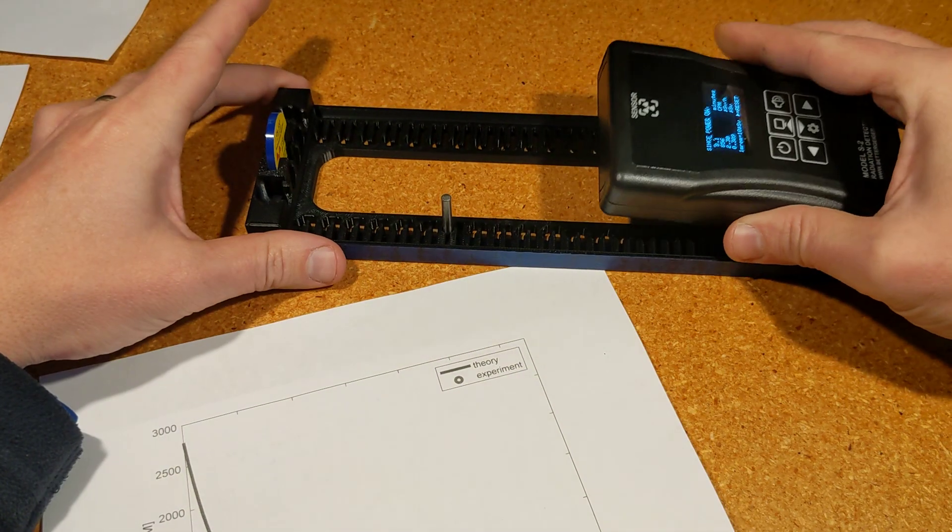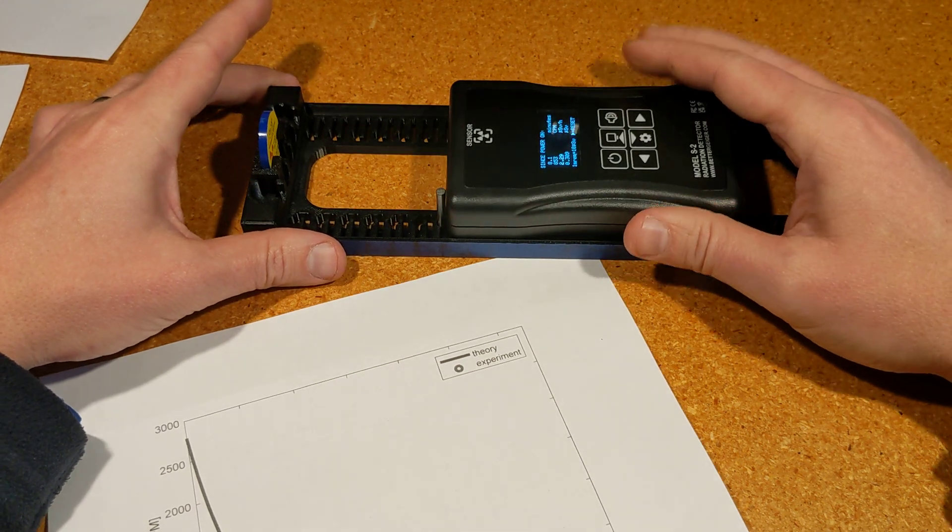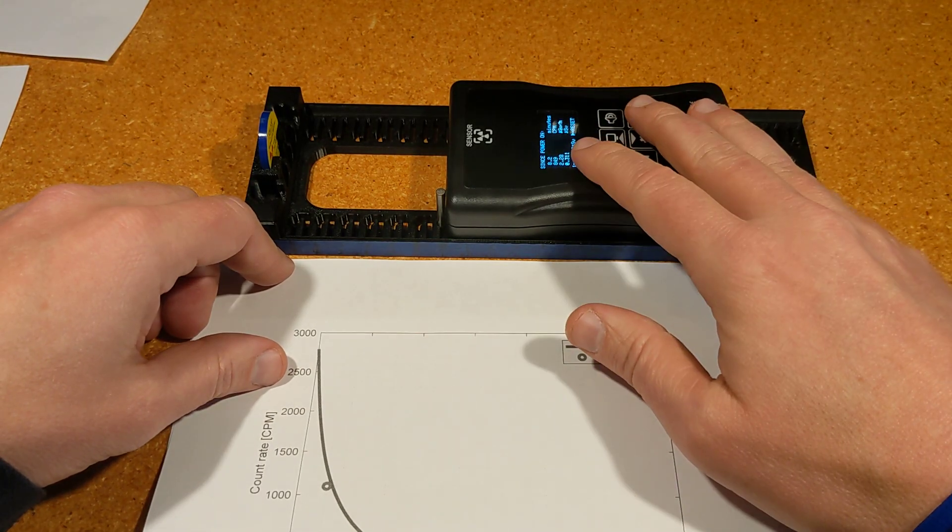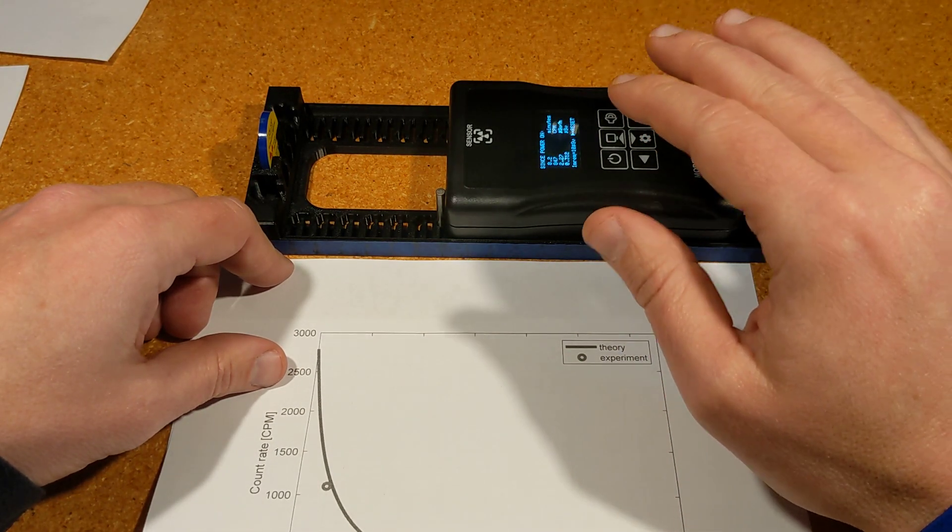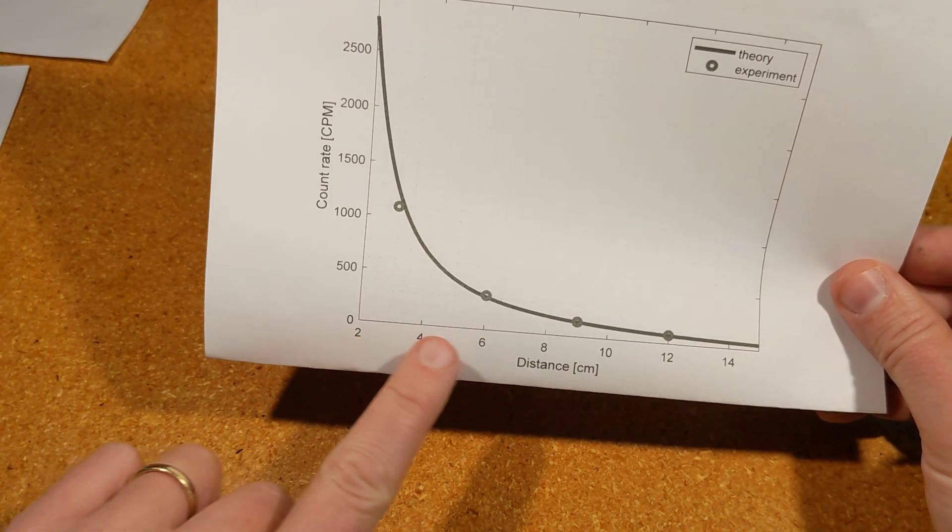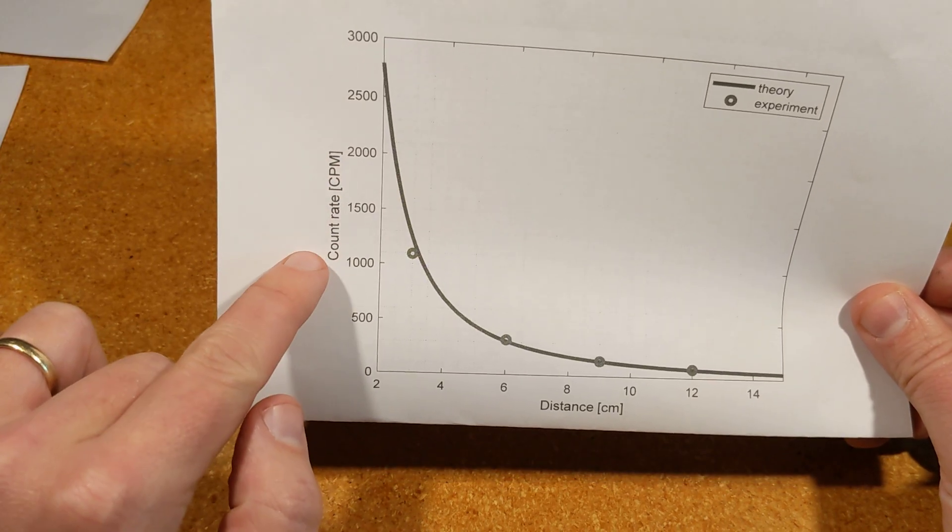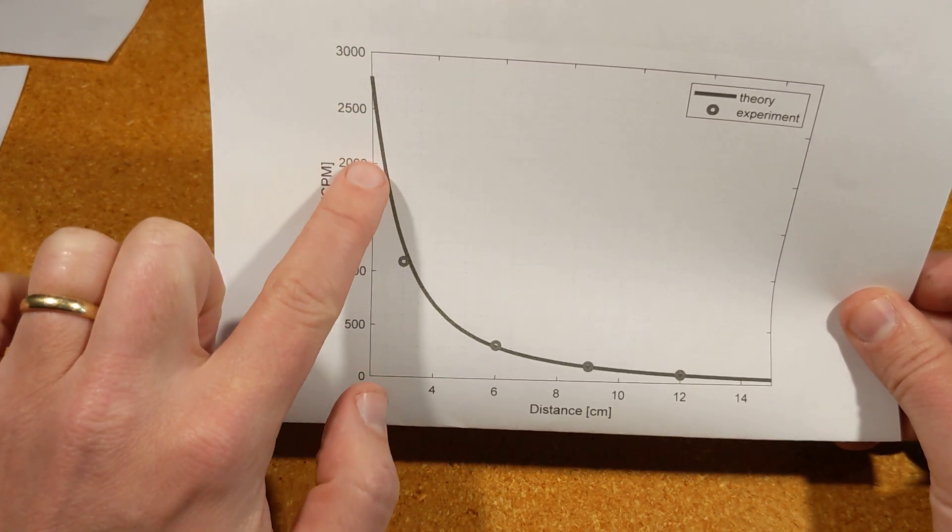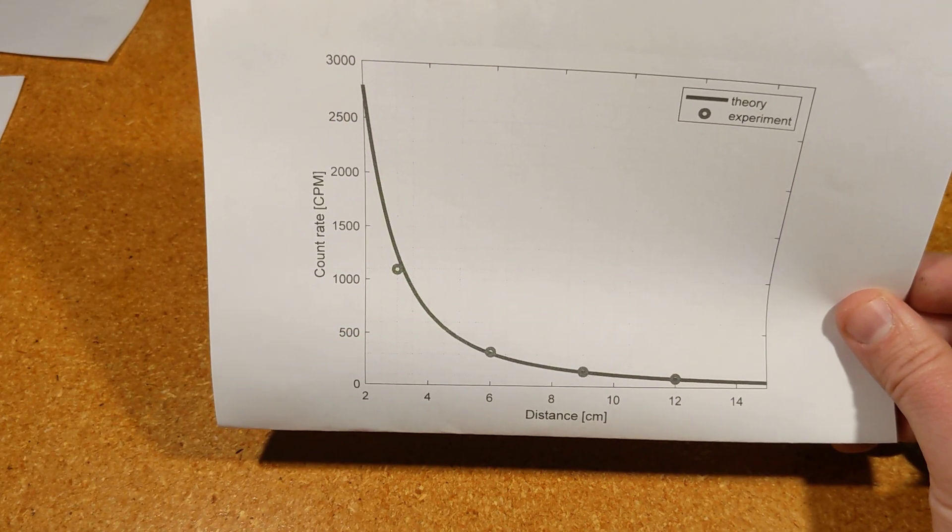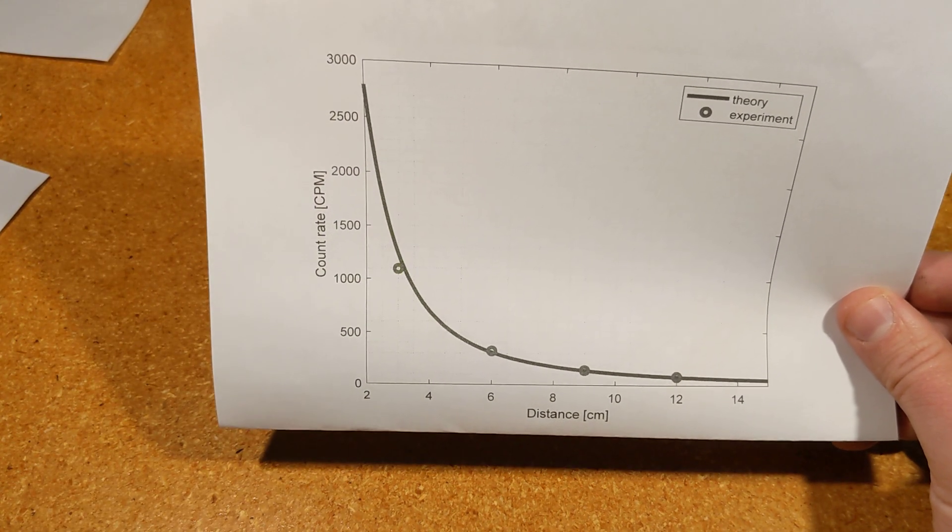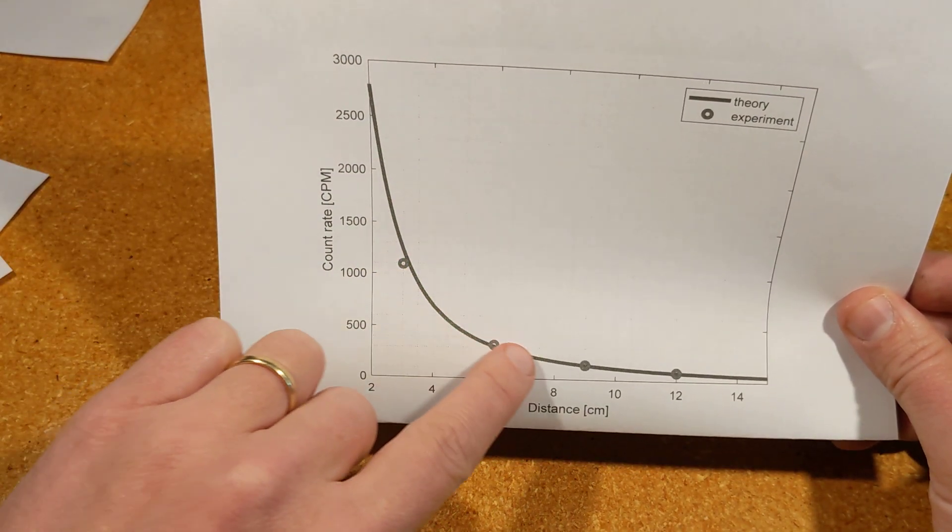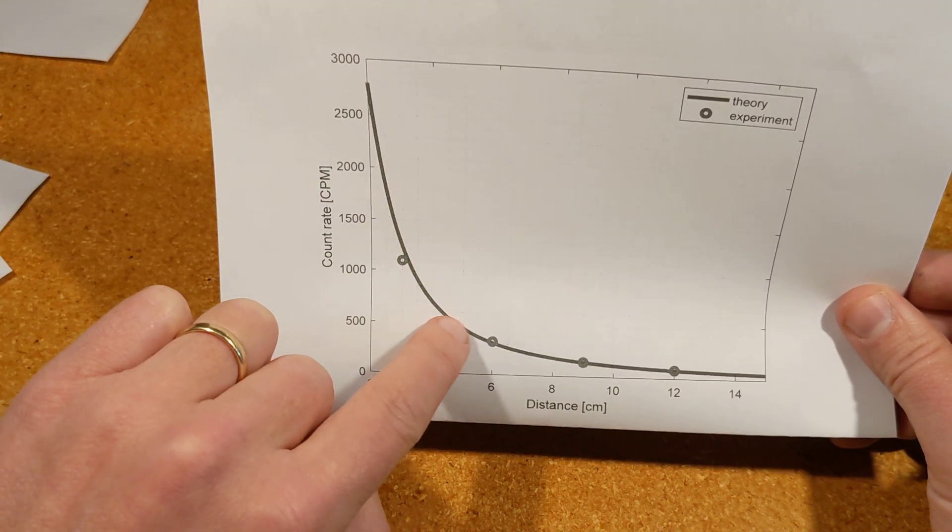There's radiation - cosmic, terrestrial, natural radiation coming from all sorts of places - and that will cause this to have a reading, a background reading at all times regardless of whether there's a source or not. That's a baseline number that has to be subtracted. When I did those four positions, I subtracted the background from each one. Then here you see distance 3, 6, 9, 12 and count rate in counts per minute.